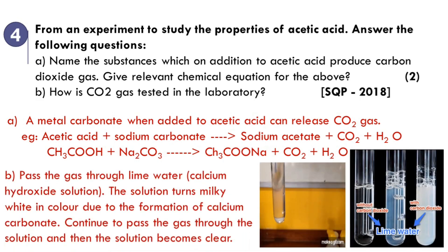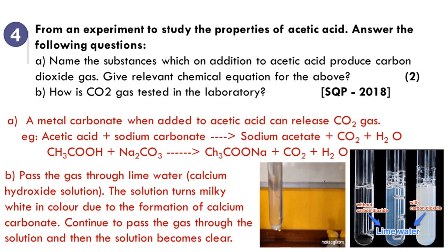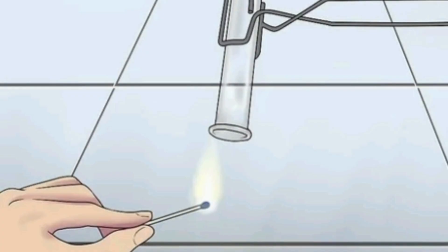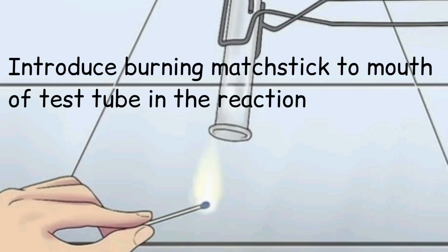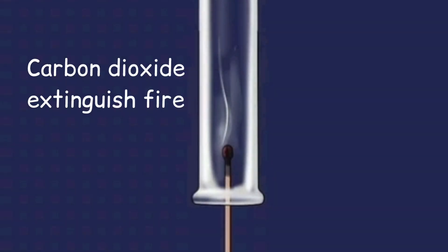How is carbon dioxide gas tested in the laboratory? When carbon dioxide gas is passed through lime water, the solution turns milky white due to formation of calcium carbonate. If you continue to pass the gas, the solution becomes clear again. Another test is using a burning matchstick — since carbon dioxide is a good extinguisher, if the matchstick stops burning, it confirms the presence of CO₂.